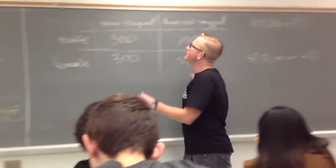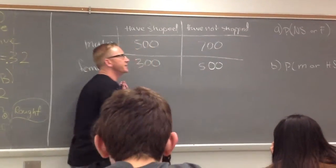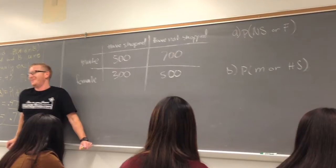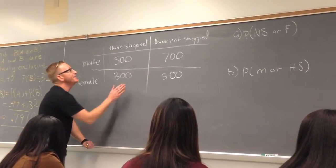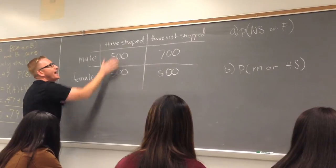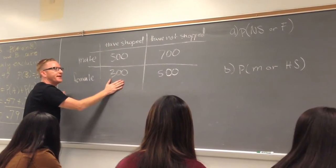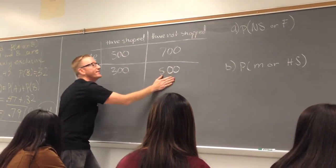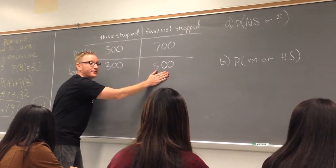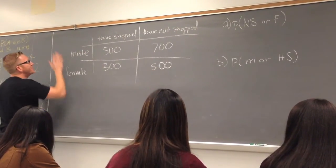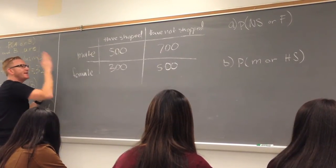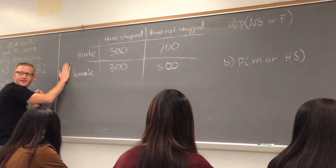So we want to find the probability when we have this contingency table, this two-way table. The way this is set up, we have people who have shopped on the internet and people who have not shopped on the internet. Those are classified in another way. This one is the people that were male in the survey, and this one was the people that were female in the survey.